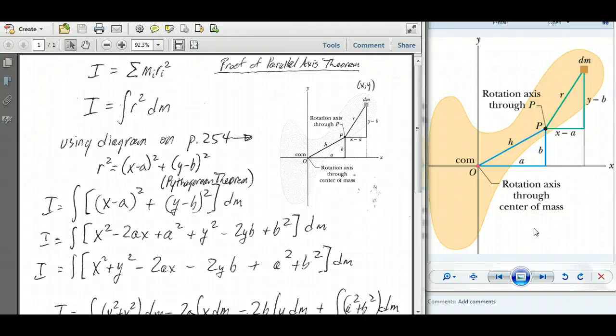This is the proof of the parallel axis theorem. So on page 254, we have this diagram.